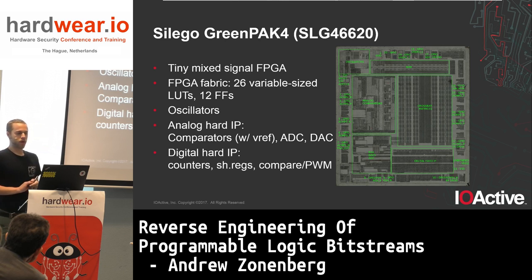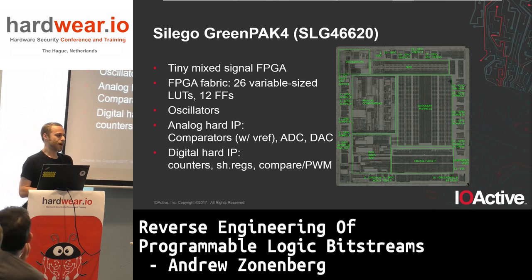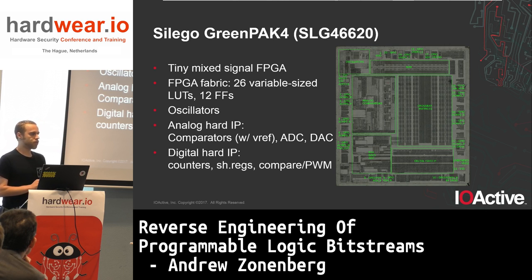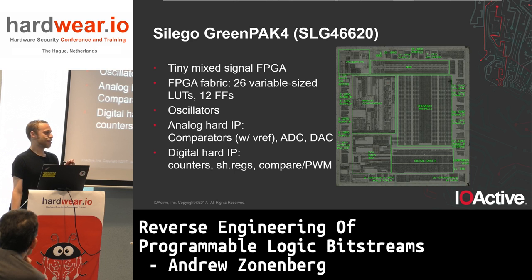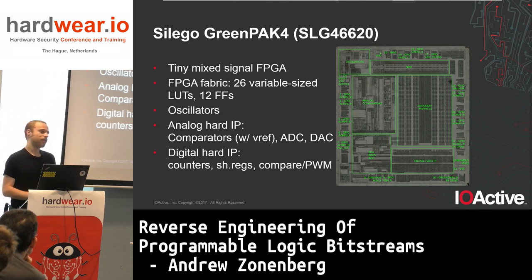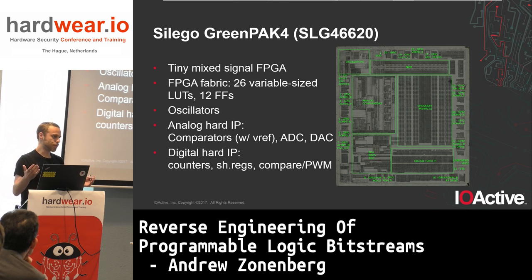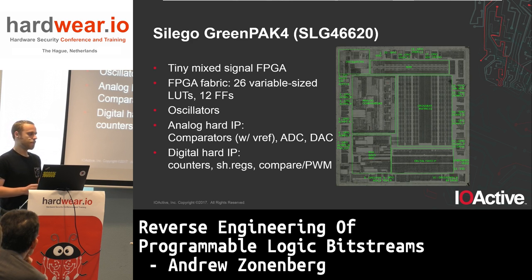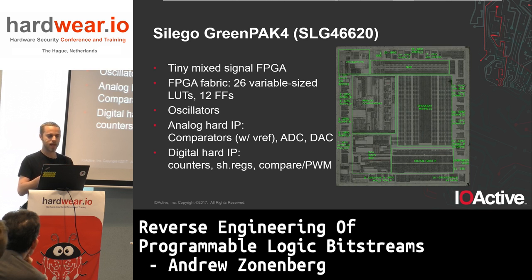The next device we're targeting is the SiLago GreenPak family — I like to describe them as a baby PSOC, with low tens of LUTs. The one I'm targeting has 25 or 26 depending on how you count. Interestingly, they have variable-size LUTs from LUT-2 all the way up to LUT-4, which is a challenge for place-and-route packing. But with the IR flow, once we know how these LUTs are formatted — and the vendor tells us — we just turn them back into Boolean logic equations and run logic minimization, so we don't care about the original structure.